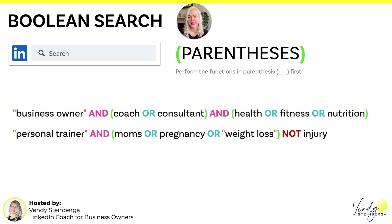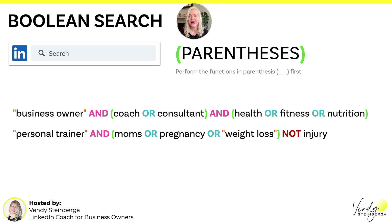Another example: "personal trainer" AND (moms OR pregnancy OR "weight loss") NOT injury. You're basically telling LinkedIn, I want to find all personal trainers that specialize in helping moms, or who focus on pregnancy or weight loss. All personal trainers you're searching for must have either of these keywords, because that's exactly what you're looking for. And you're saying NOT injury because you're not interested in injury personal trainers. This is how you build upon operators to structure very specific searches that will find and bring back your ideal clients in the results.